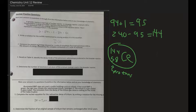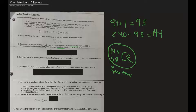Number two: compare the amount of energy released by 1 mole of completely fissioned plutonium-239 to the amount of energy released by the complete combustion of 1 mole of methane. Combustion is a chemical process, whereas fission is nuclear. Nuclear reactions and processes release a lot more energy than chemical ones.